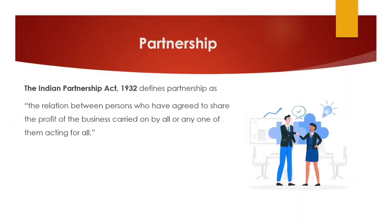Today we will be steering into the next form of business organization — the partnership form. So far we have mainly studied sole proprietorship, where there is only one person involved in the business. He is investing his capital, getting profits, and also bearing all the risk. But there were some demerits, like unlimited liability, continuity issues, and lack of expertise. Partnership covers all those demerits of sole proprietorship.